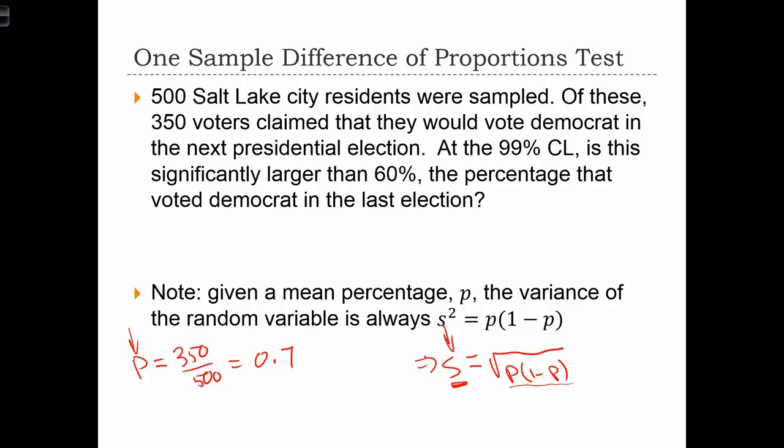So in this case, the sample proportion is 350 over 500, 70%. Alpha is going to be 1% because they want to be 99% confident.